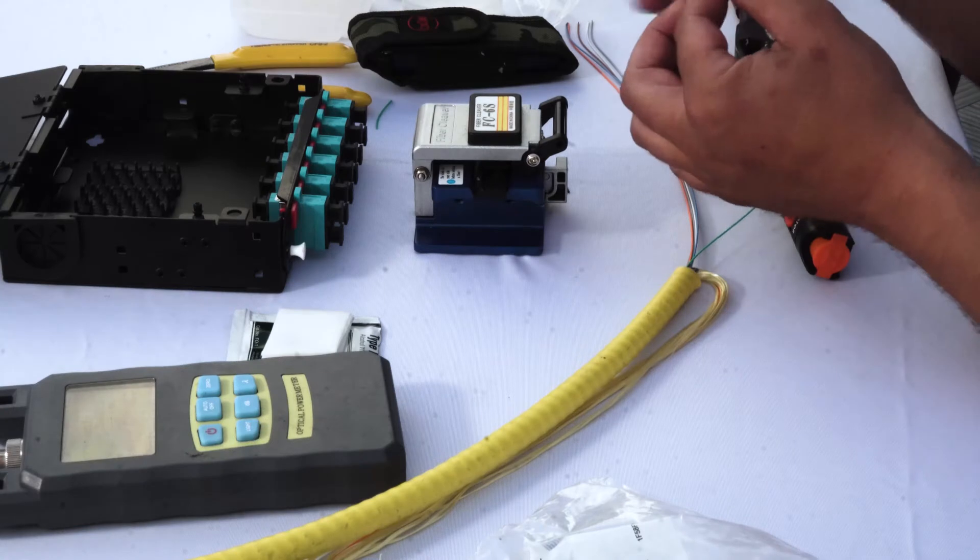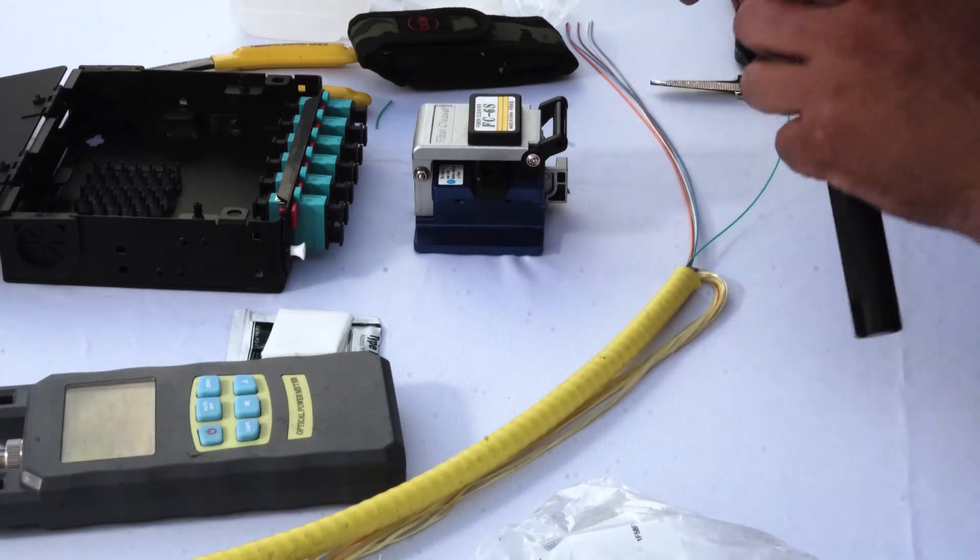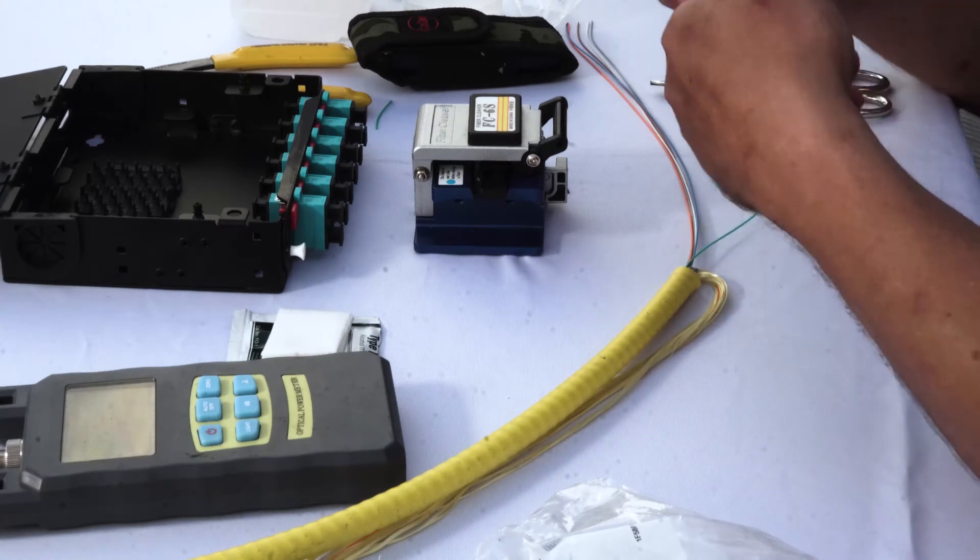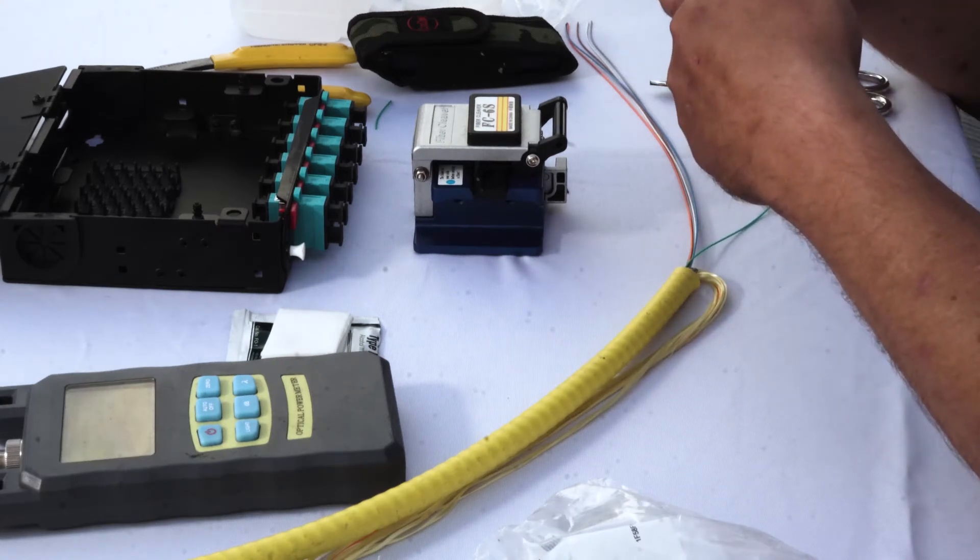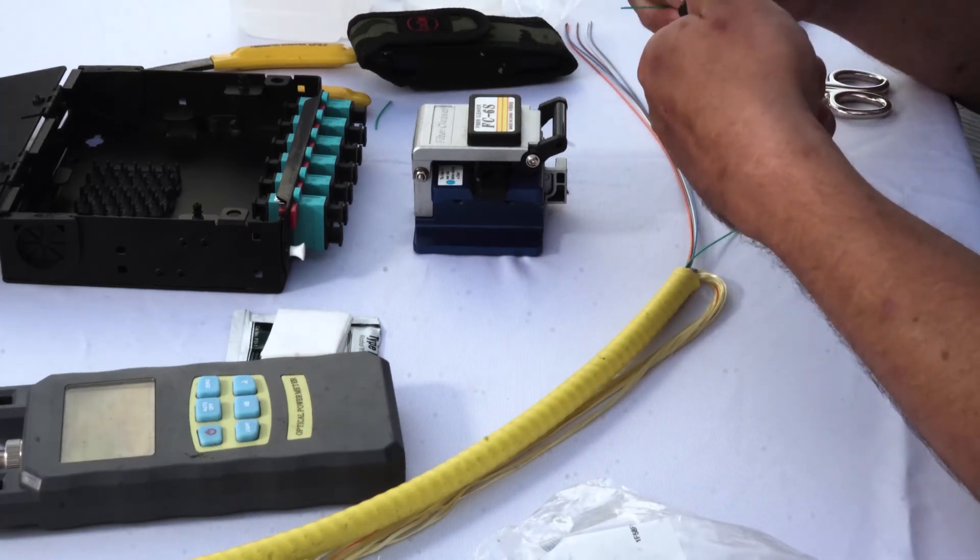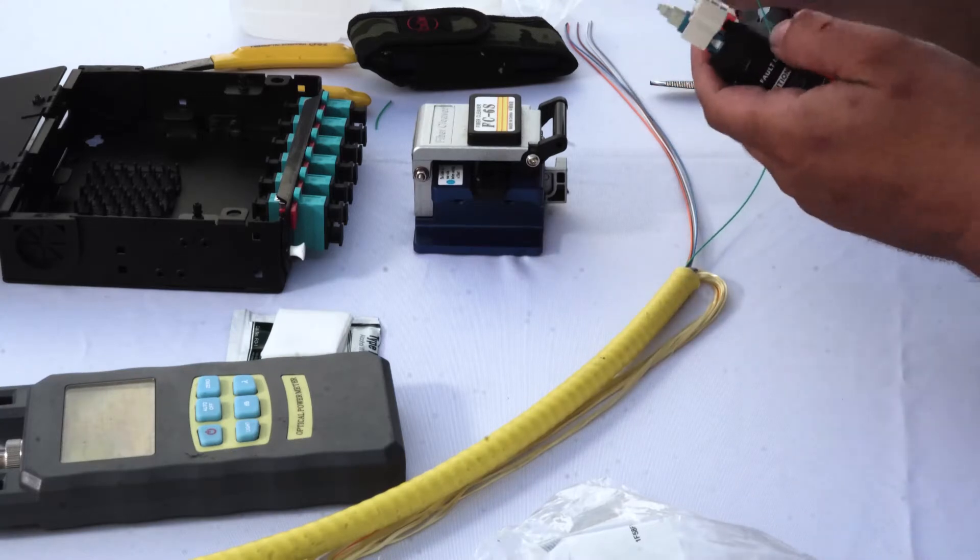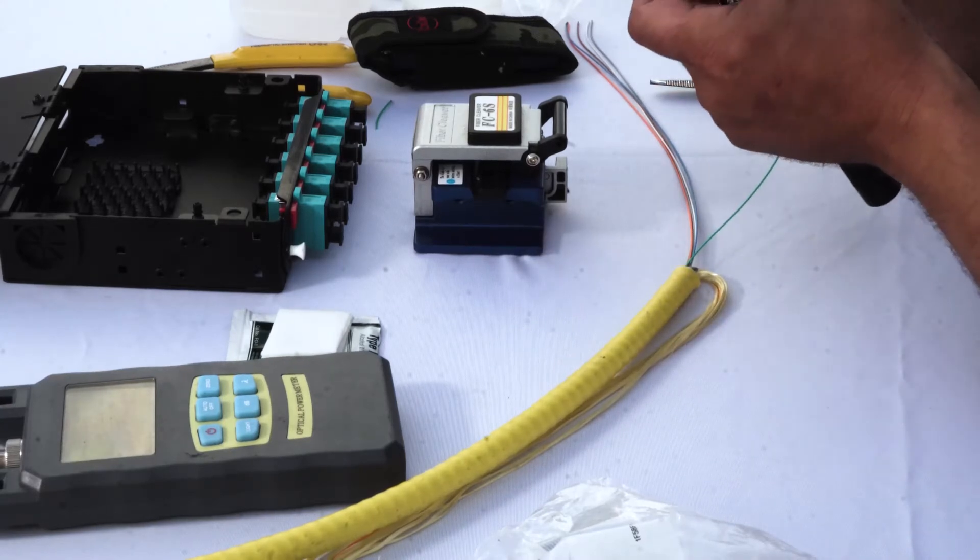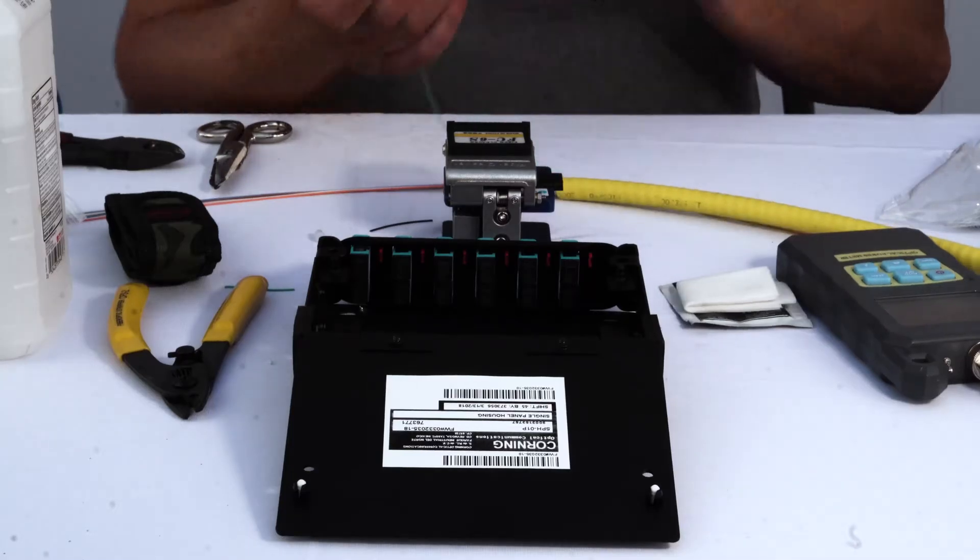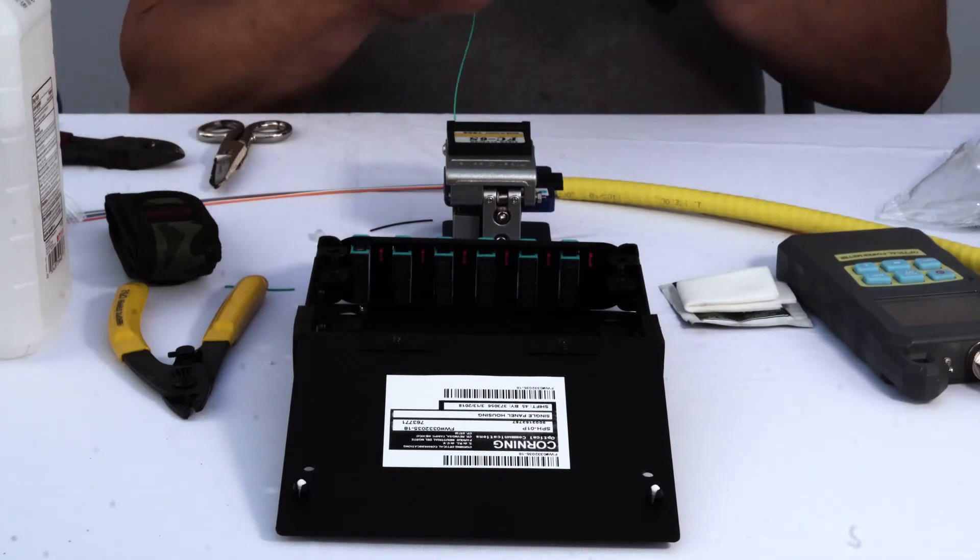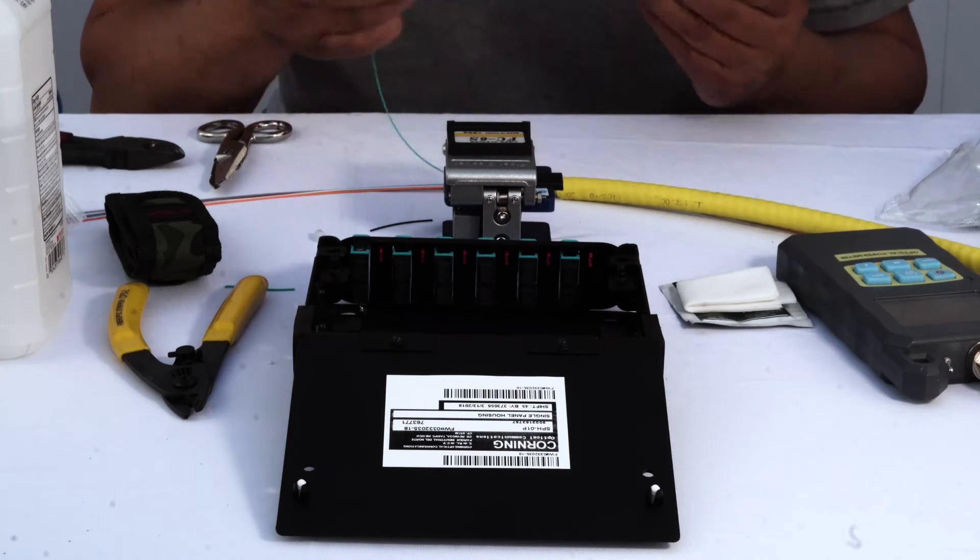We're going to insert the Fast Cam into our visual fault locator. Got to be kind of gentle with this guys. If you press too hard you can break the porcelain that's actually inside. Done it before. All right, let's get our power on, and now we have our laser going through the connector.